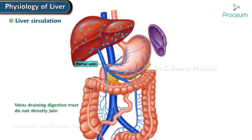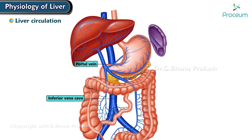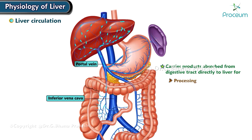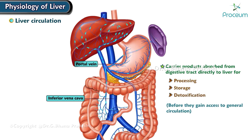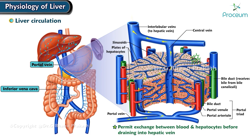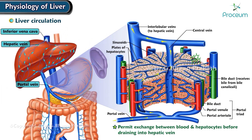The veins draining the digestive tract do not directly join the inferior vena cava. Instead, the veins from the stomach and intestine enter the hepatic portal vein, which carries the products absorbed from the digestive tract directly to the liver for processing, storage, or detoxification before they gain access to the general circulation. Within the liver, the portal vein breaks up into a capillary network — the liver sinusoids — to permit exchange between the blood and hepatocytes before draining into the hepatic vein, which joins the inferior vena cava.